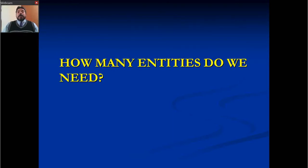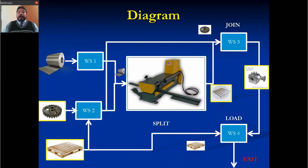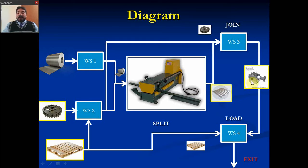The first question we need to answer is how many entities do we need? Using this diagram, we can identify the rolls, the gears, the pallets, the metal sheet, and the finished product. So we have 5 entities.